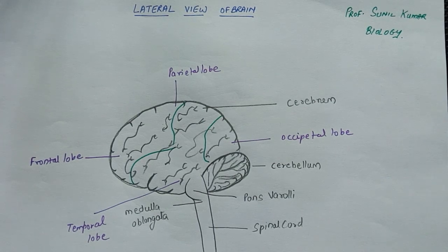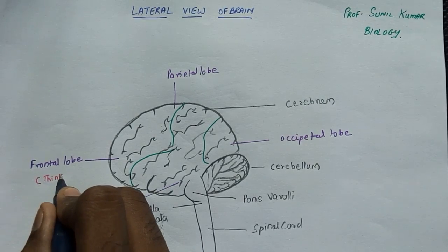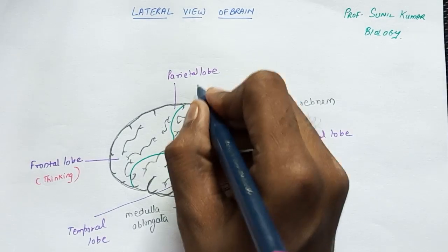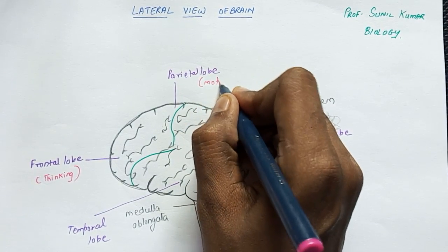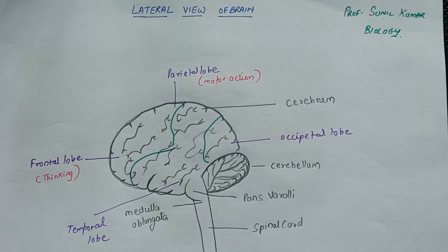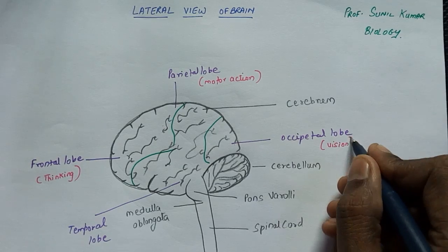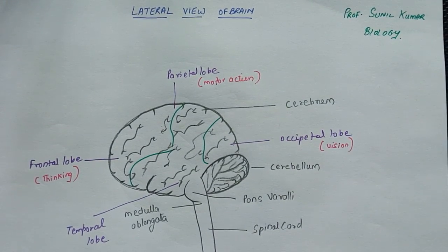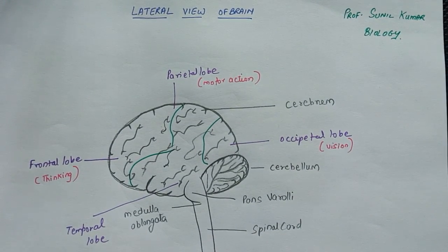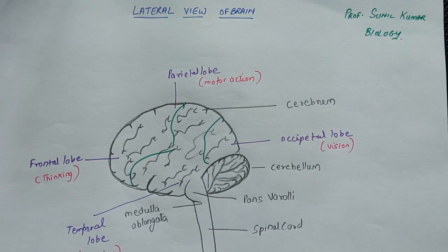The frontal lobe is related to thinking. The parietal lobe is for motor action — whatever action we do, like playing cricket, is related to the parietal lobe. The occipital lobe is related to vision — we are able to observe anything because of the occipital lobe. The temporal lobe is for hearing. These are the basic one-line functions for each lobe.